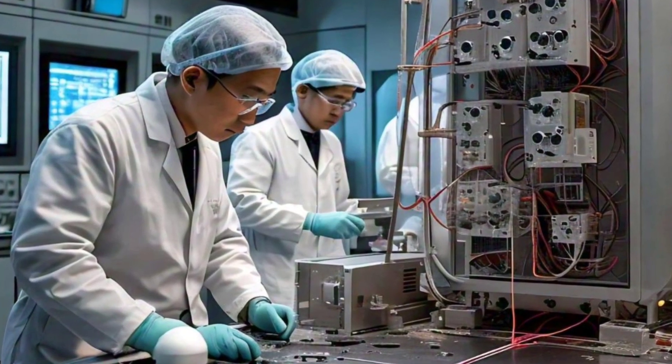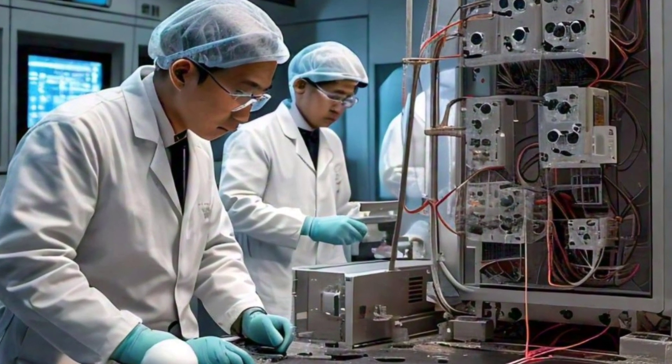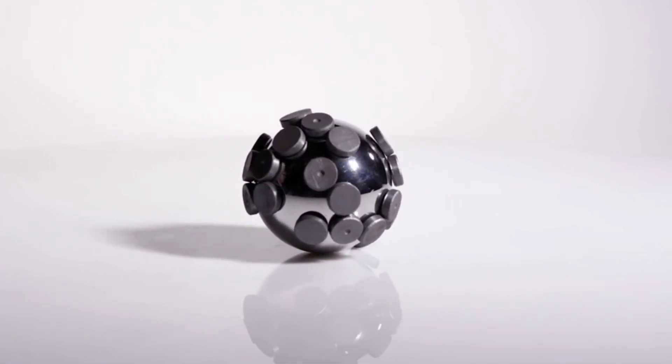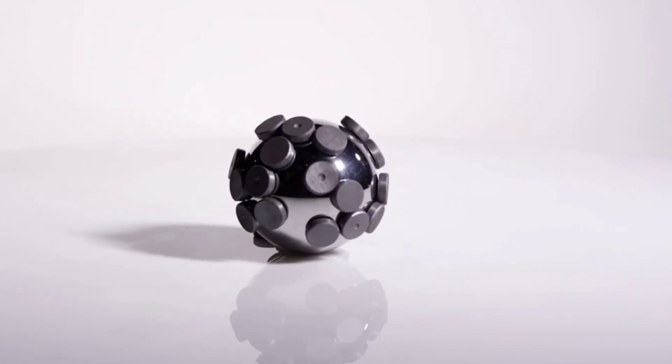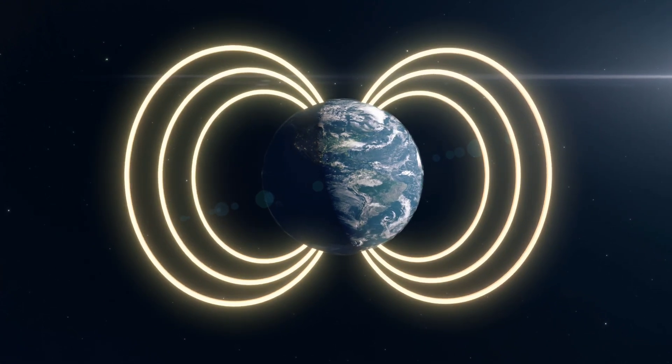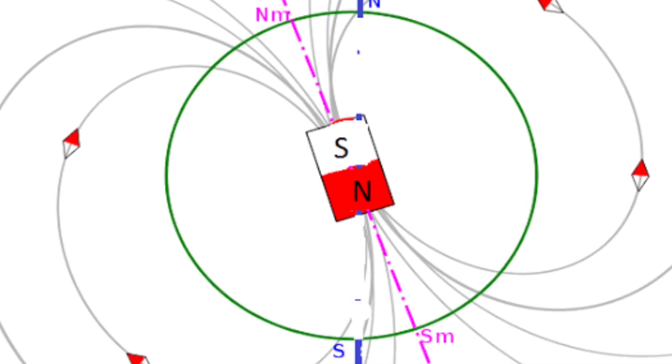Science just reached an electrifying new milestone. Chinese scientists have created the world's strongest resistive magnet, producing a magnetic field that's more than 800,000 times stronger than Earth's own magnetic field. But what does that actually mean? Let's break it down.